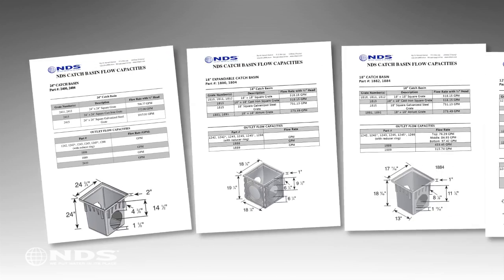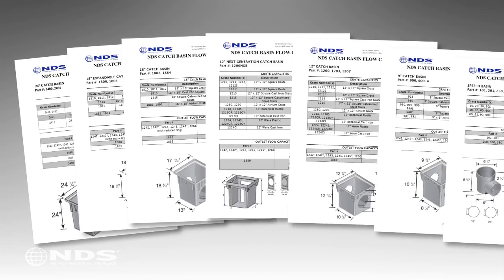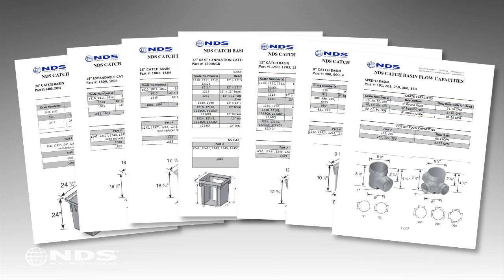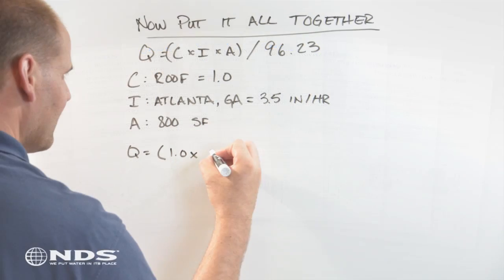Flow capacity tables have been created for each catch basin. These tables show the grates that fit into each basin and their corresponding flow capacities. The outlet flow capacities are also shown for each basin.